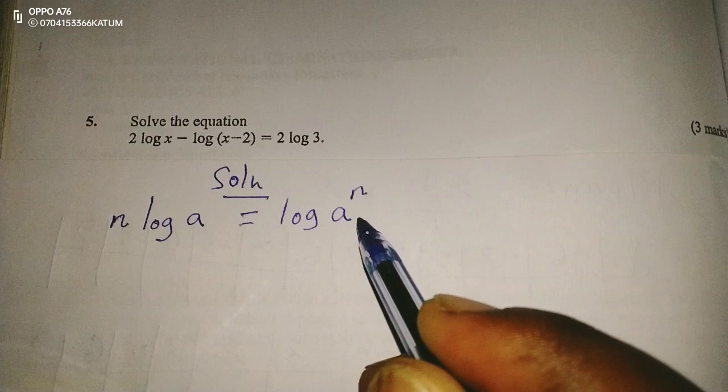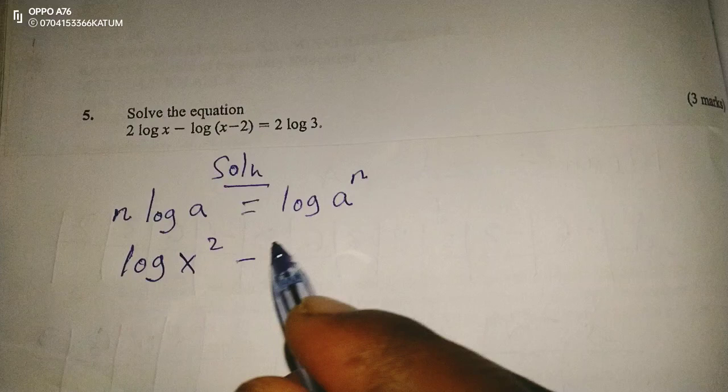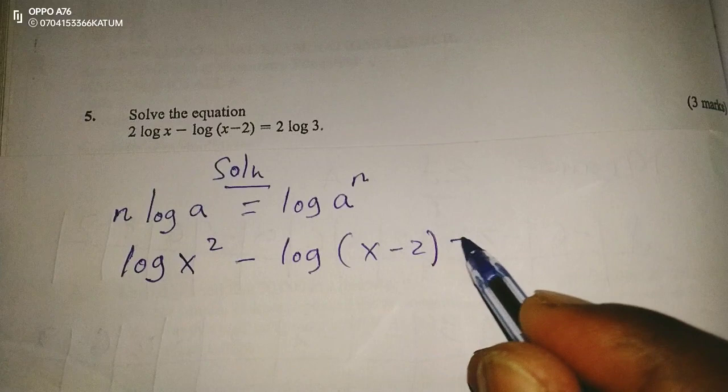That means applying this to the first and last term, we shall have log x², now x becomes squared, the 2 here now, minus log(x minus 2), this is equal to log 3².